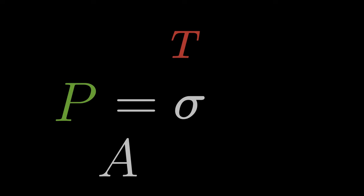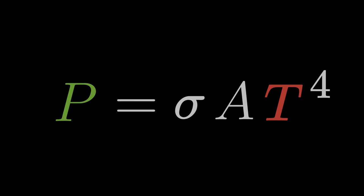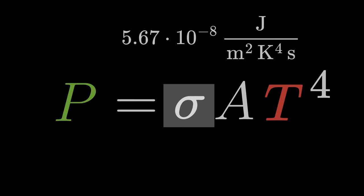The Stefan-Boltzmann law is P equals sigma times A times T to the power of 4. Sigma is the Stefan-Boltzmann constant with the value 5.67 times 10 to the power of minus 8, joules per meter squared times Kelvin to the power of 4 times second.